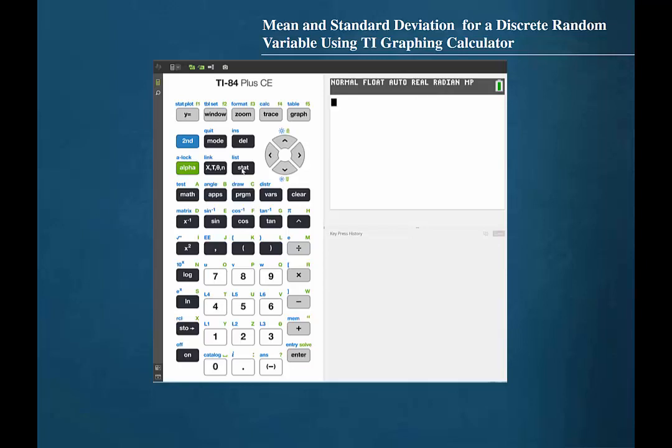If you are using a calculator that does not utilize the stats wizard, then you will need to make sure that the syntax is correct. When the screen presents the 1 variable stats function, you should then press 2nd 1, comma, 2nd 2, then press ENTER.